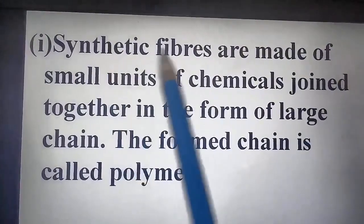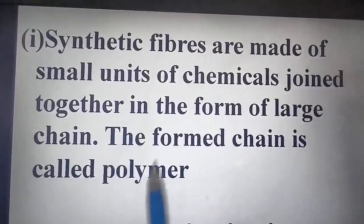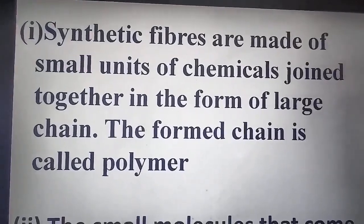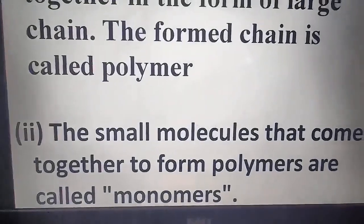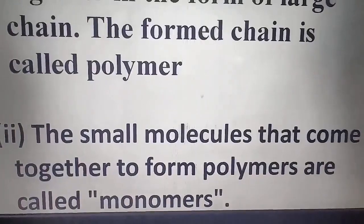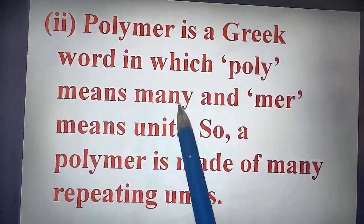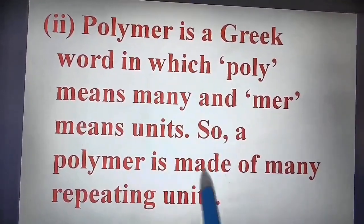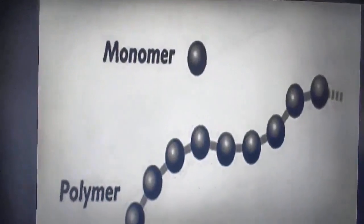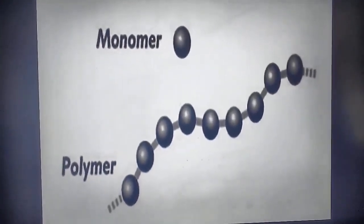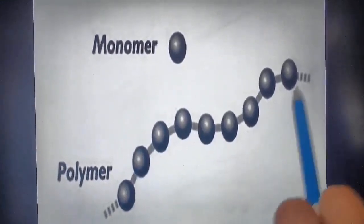Synthetic fibers are made from small units of chemicals joined together in the form of a large chain. This large chain is known as a polymer. The small repeating units are called monomers. Poly is a Greek word where poly means 'many' and mer means 'unit,' so a polymer is made up of many repeating units. Single units are monomers, and chains of monomer units are polymers.